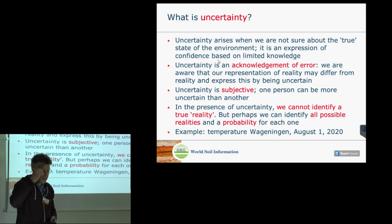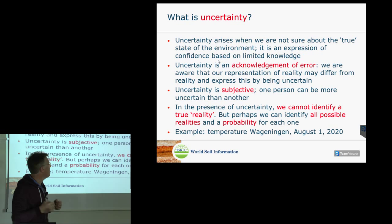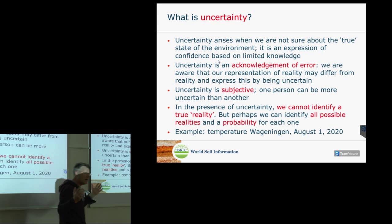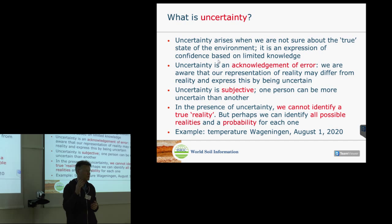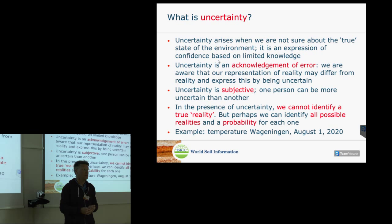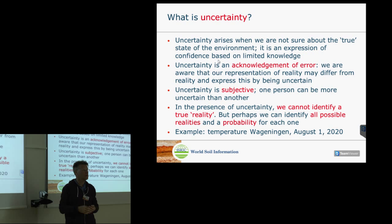So we defined what error is — now what about uncertainty? They are related but not the same. Uncertainty belongs to people: I am uncertain about the number of people in this building because I have limited information. If I had perfect information, I would have no uncertainty, there would be no error in my estimate. When there is limited information, we are uncertain and we acknowledge that our representation of reality might be in error. Uncertainty is an acknowledgement of error — you are aware that your representation of reality is not perfect.